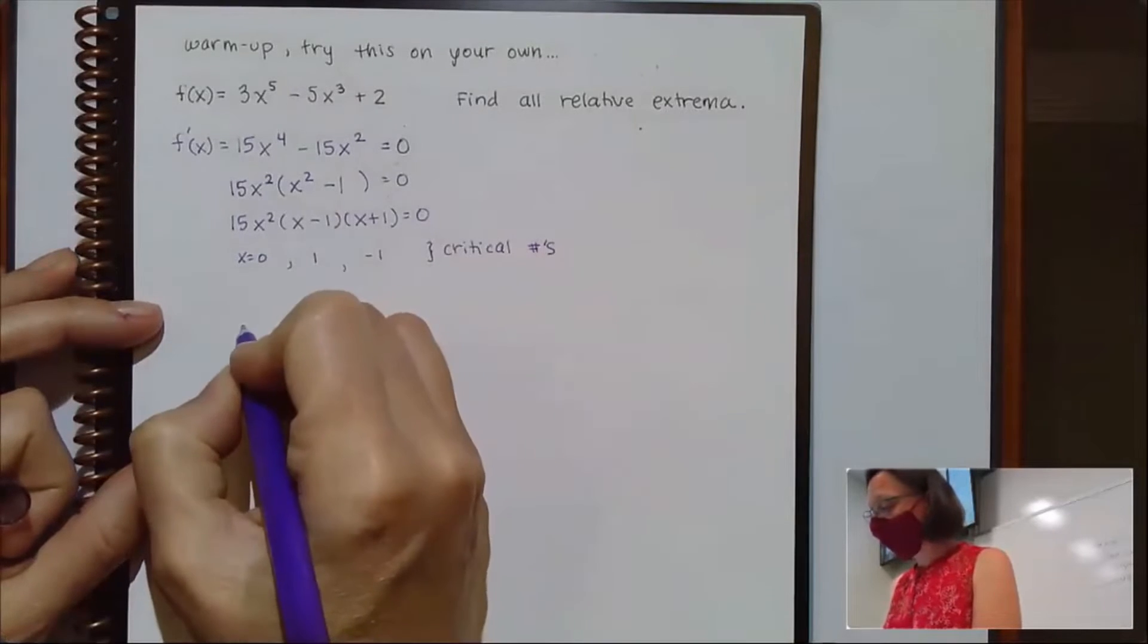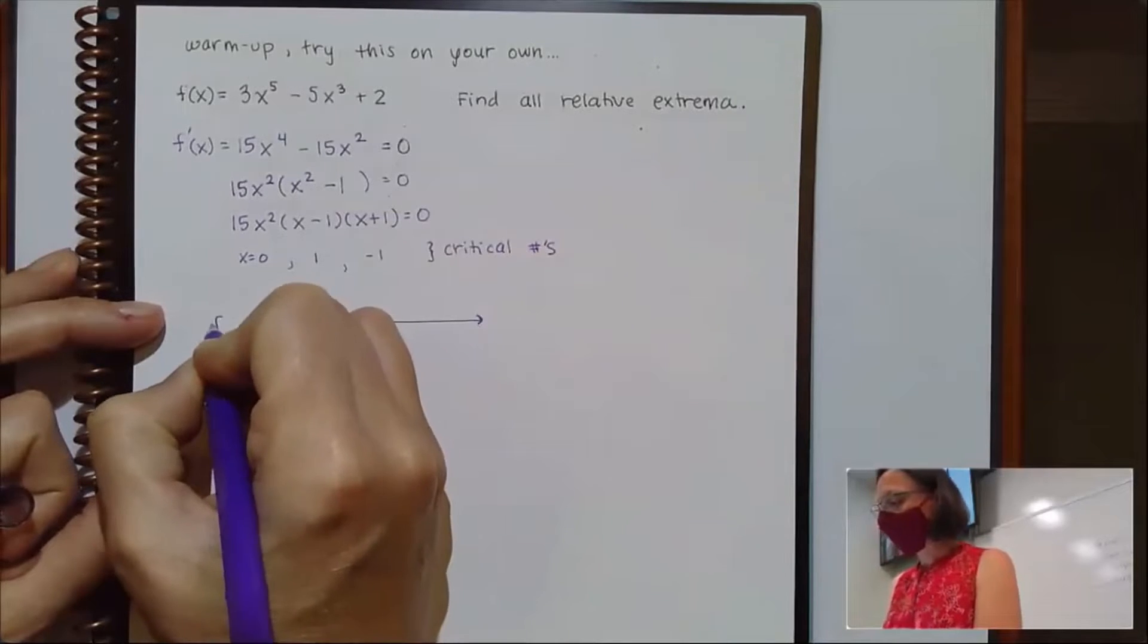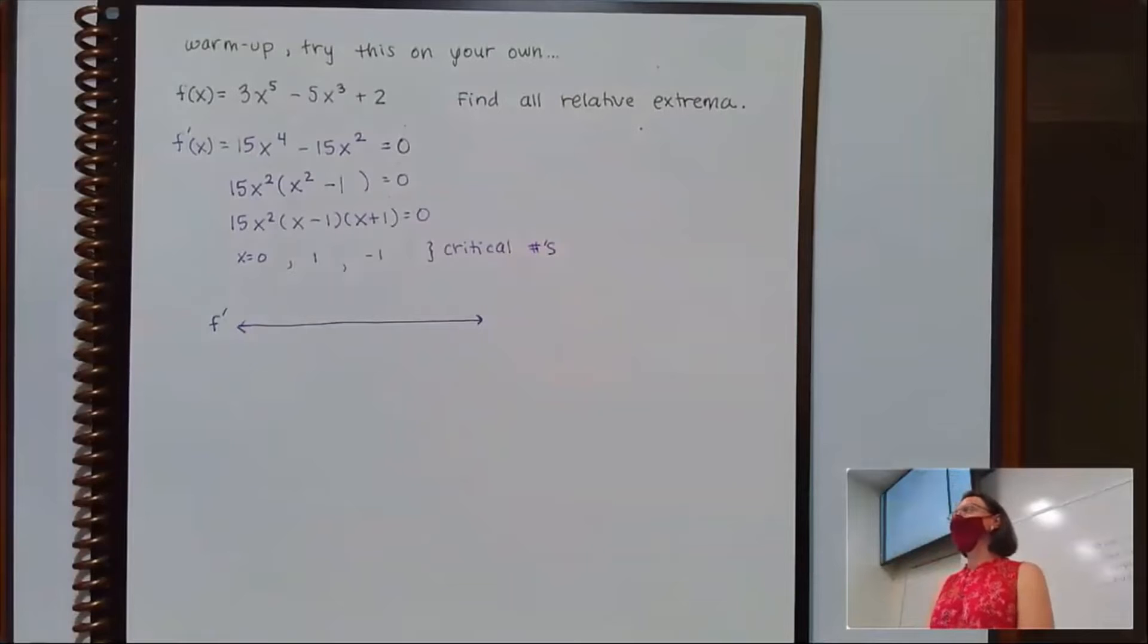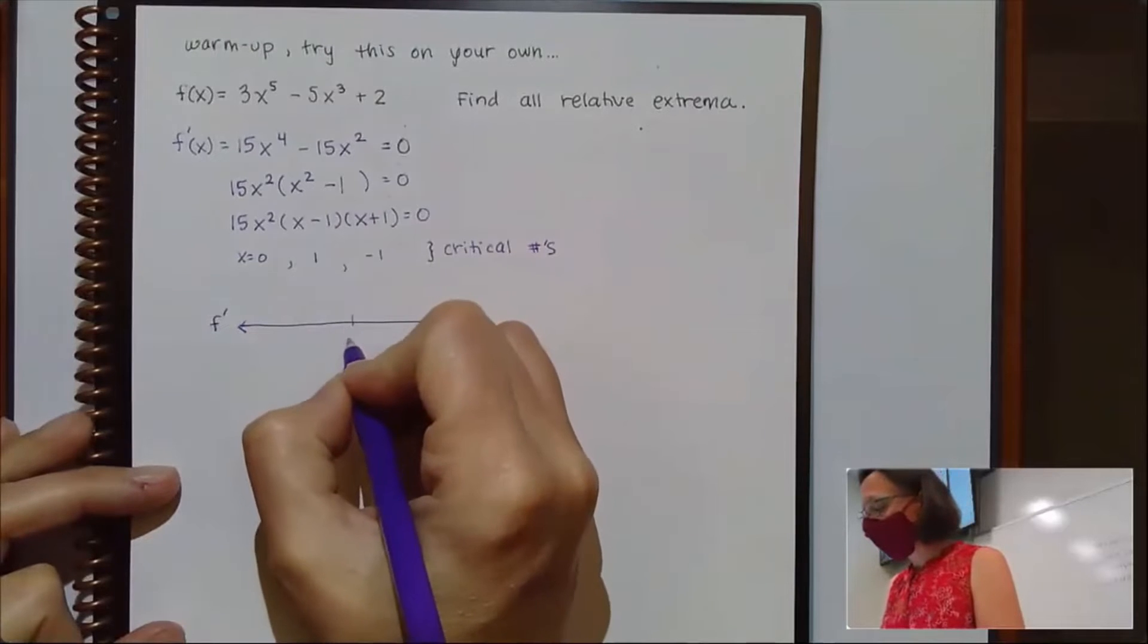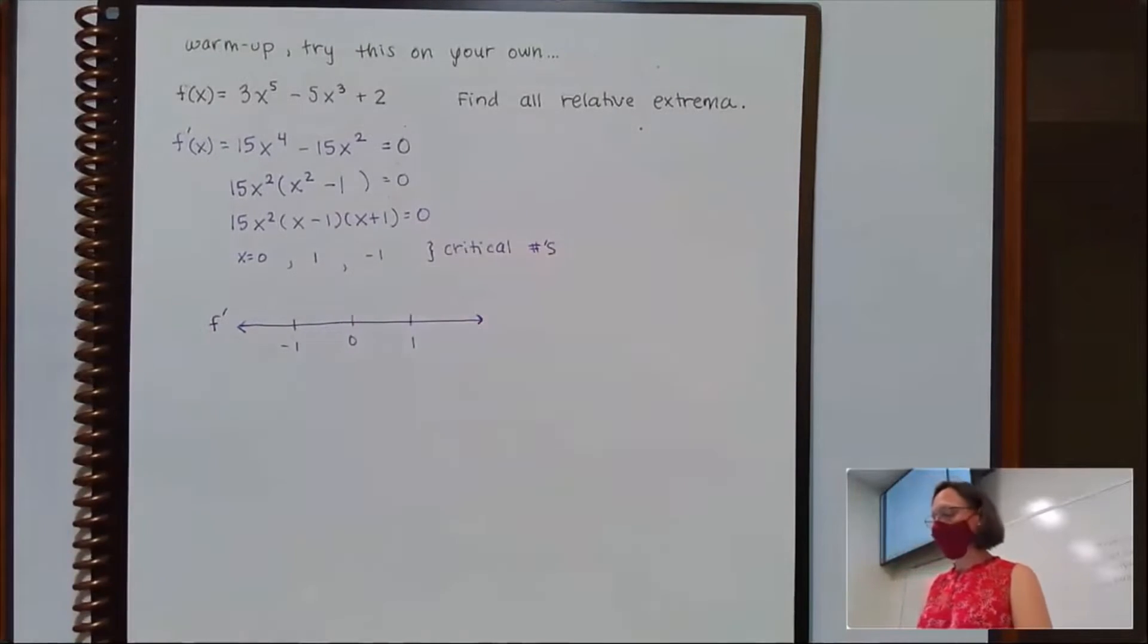But from there, personally I'm going number line. So I'm going to draw a number line and remember to label it as my derivative. Now that's really just for me to remember where am I going to plug test points in. So I'm looking at 0, negative 1, and 1.